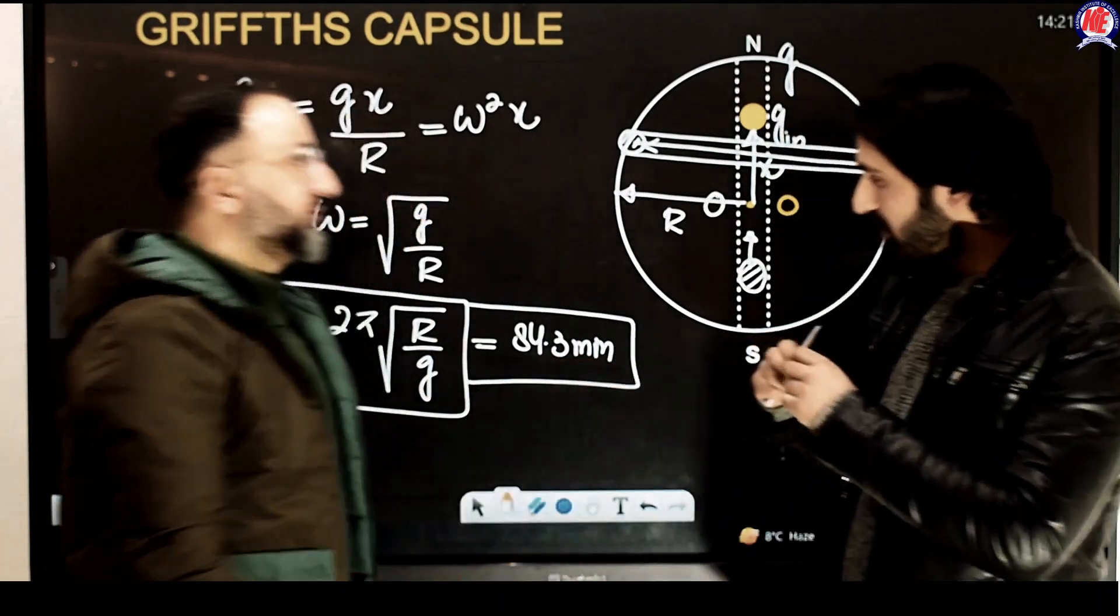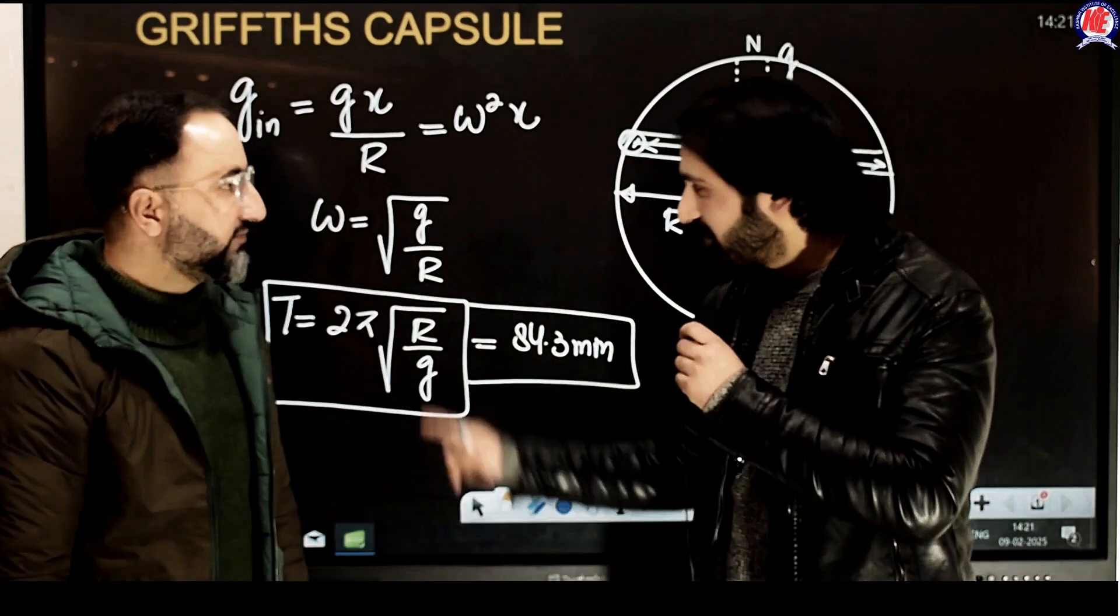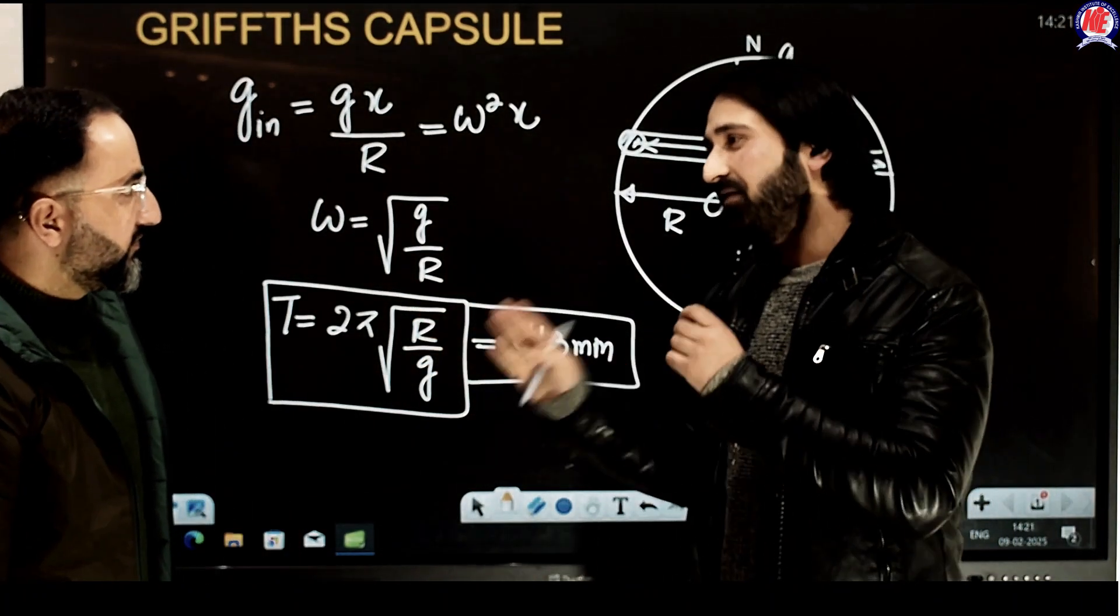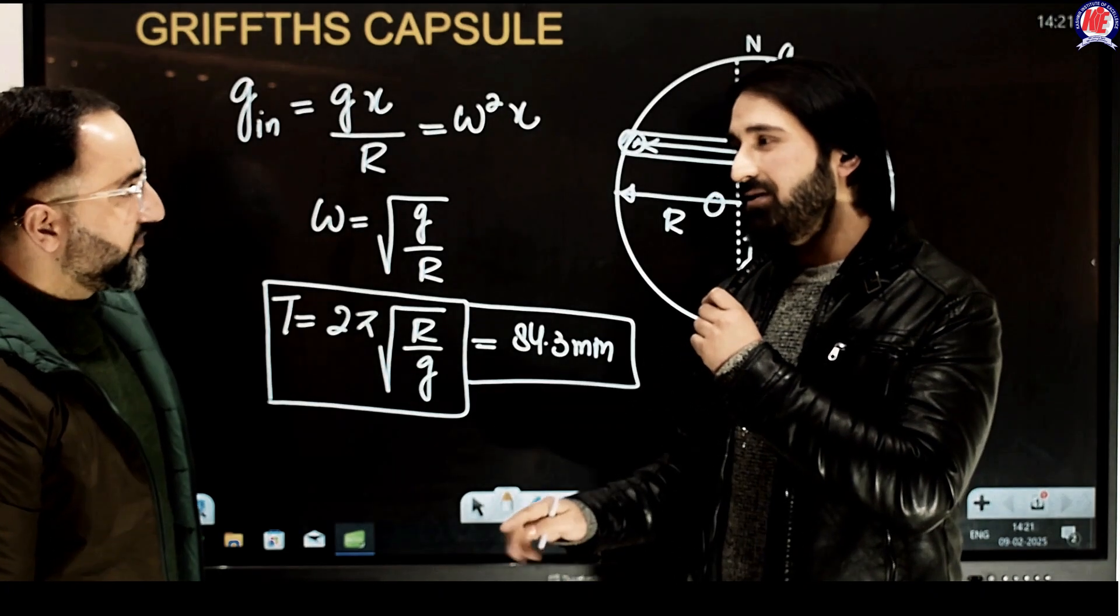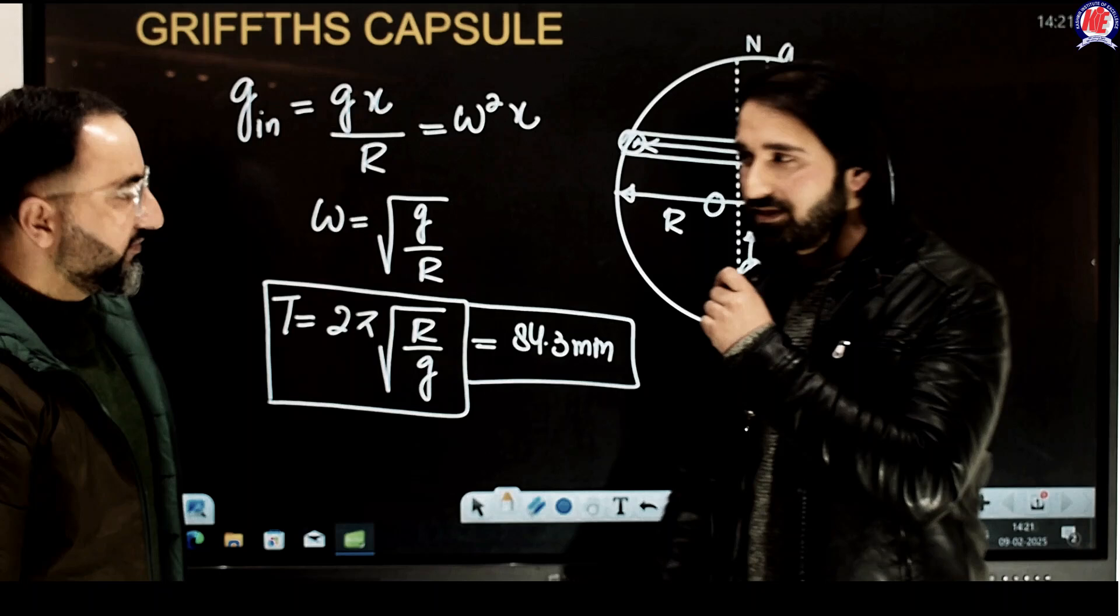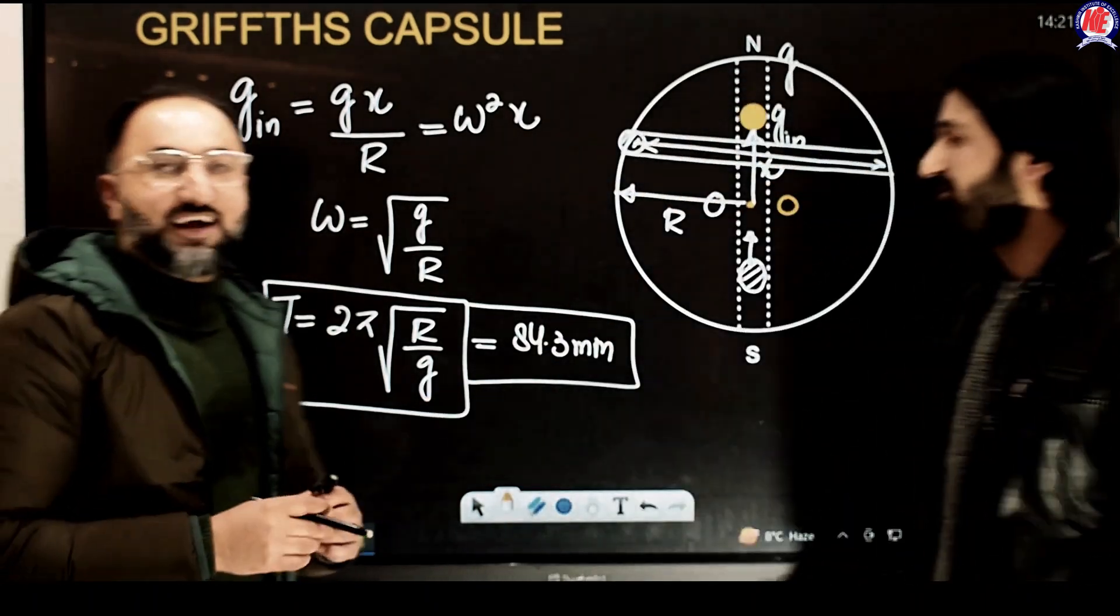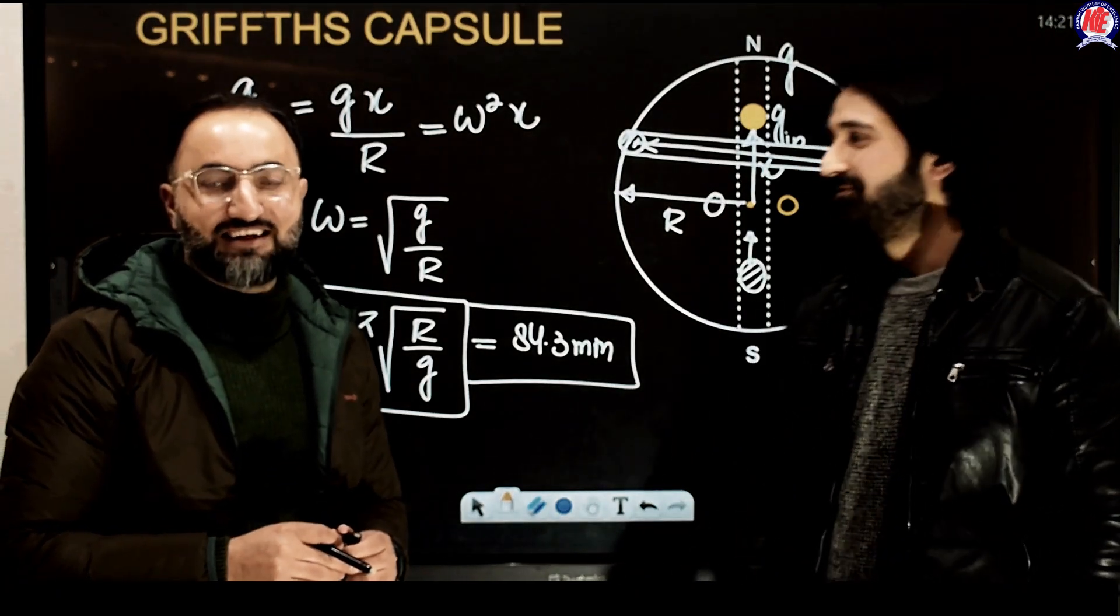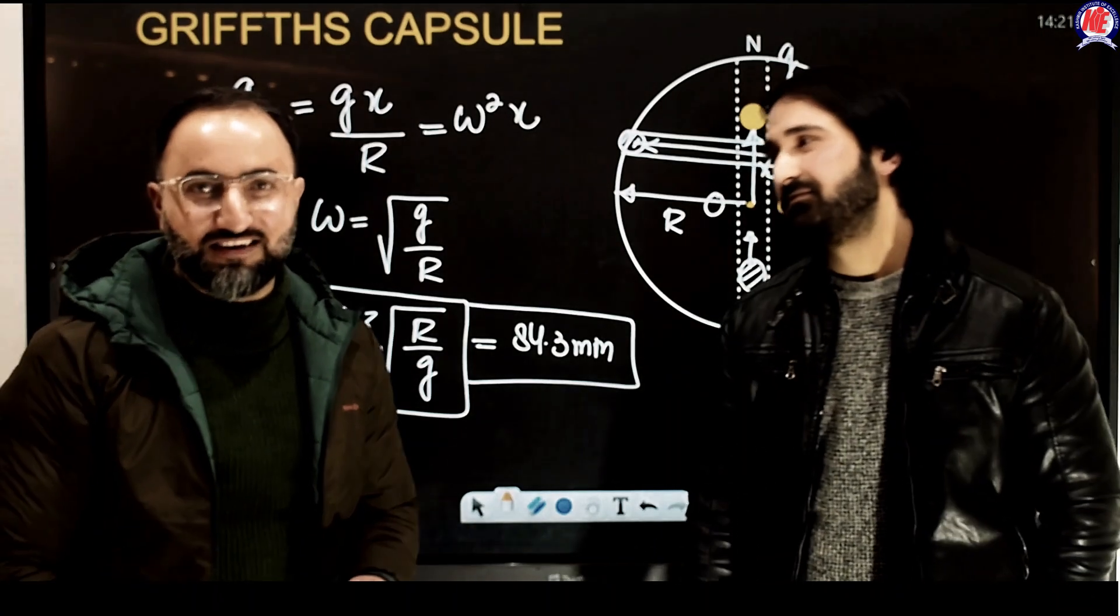Since we are done with the mathematical part of it, but for the love of those who study physics, this equation, people from physics tend to call this a magical equation. This T equals 2π under root of r by g. There are other facets associated with it. So if you can just put them across. So this equation, it's a beautiful equation. And you know what, there's a phrase that nature loves symmetry. And this equation is repeated so many times in physics.